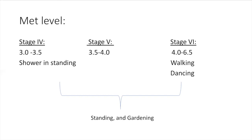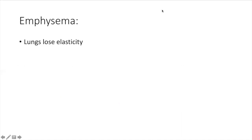Stage five is 3.5 to 4.0 MET — Homer starts walking, cycling, golfing, dancing, and digging in the garden. Stage six is 4.0 to 6.5 MET — his ambulation increases to 3.5 miles per hour on level surfaces, and he starts to slow dance. We know Homer Simpson likes to dance with his beer in hand.